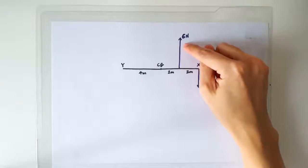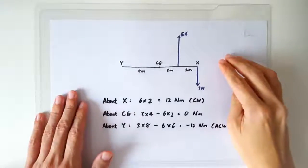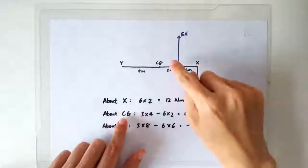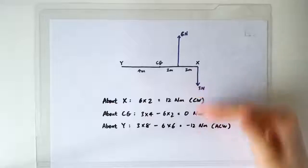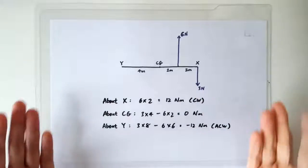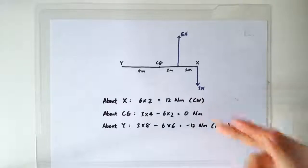Now let's increase one of the forces to be 6 newtons instead. Now if you calculate the moment about x, about the CG, and about y, you're going to get different results. What's happening? Is this rod going to rotate clockwise, not rotate, or anticlockwise?